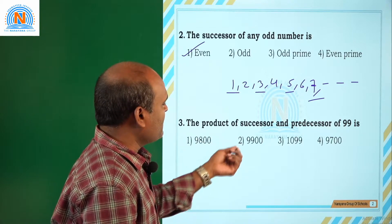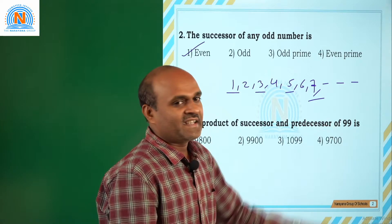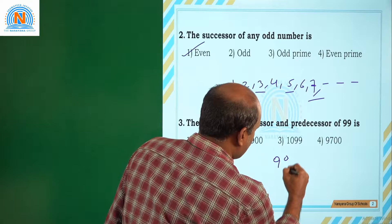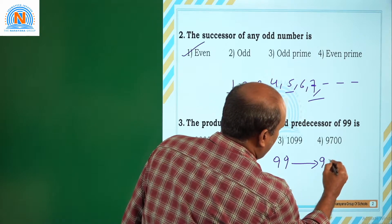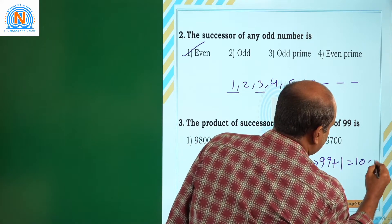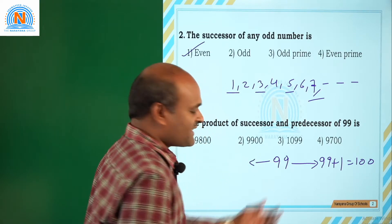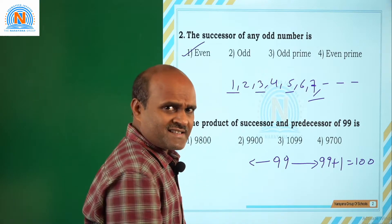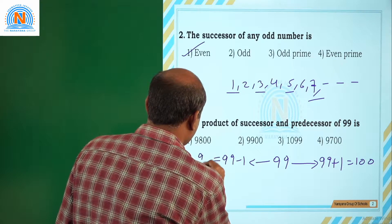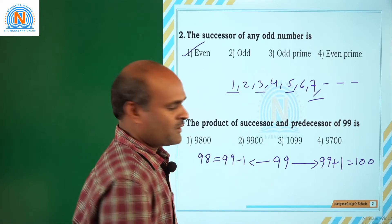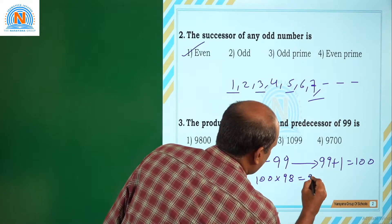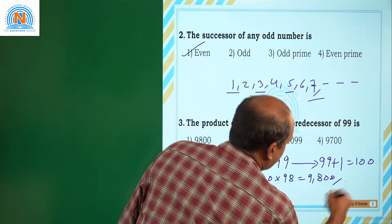The product of successor and predecessor of 99 is. Product — he is asking product. Now, what is the successor of 99? 99 plus 1 — successor means plus 1 — that is equal to 100. What is the predecessor? The predecessor is 99 minus 1, that is equal to 98. He is asking product: 100 into 98, that is equal to 9,800.